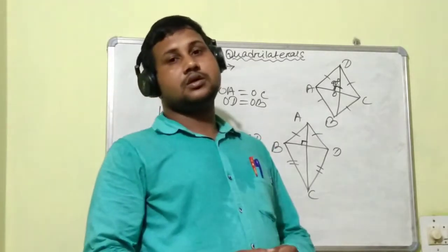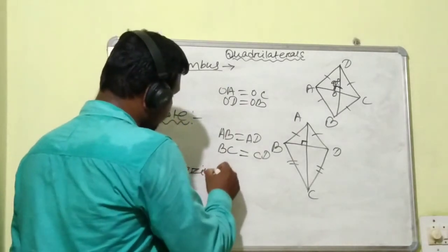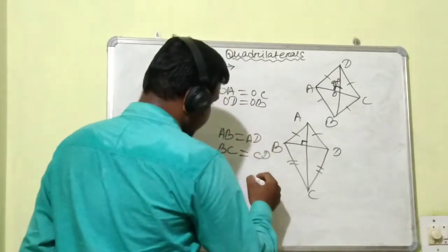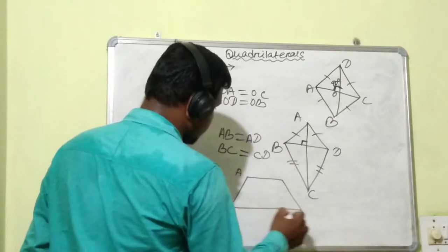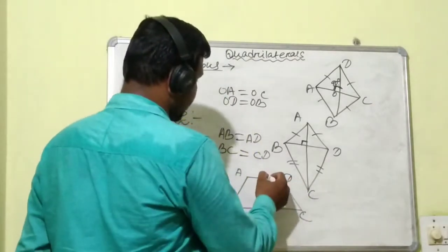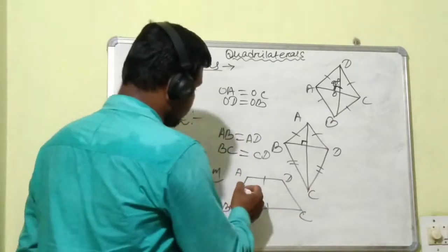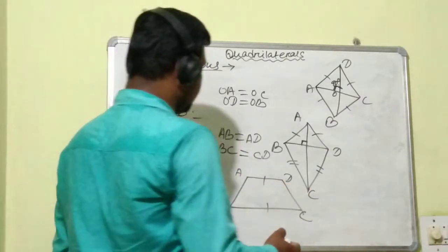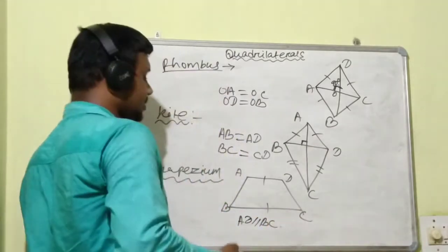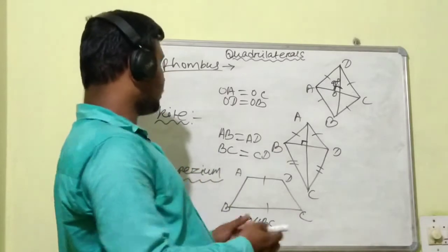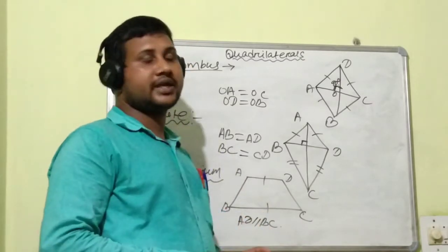Next we will discuss about trapezium. Trapezium is also a type of quadrilateral whose one pair of sides is parallel, and another pair of sides is not parallel. We write AD parallel to BC. The definition is: the quadrilateral having a pair of parallel sides is called a trapezium.